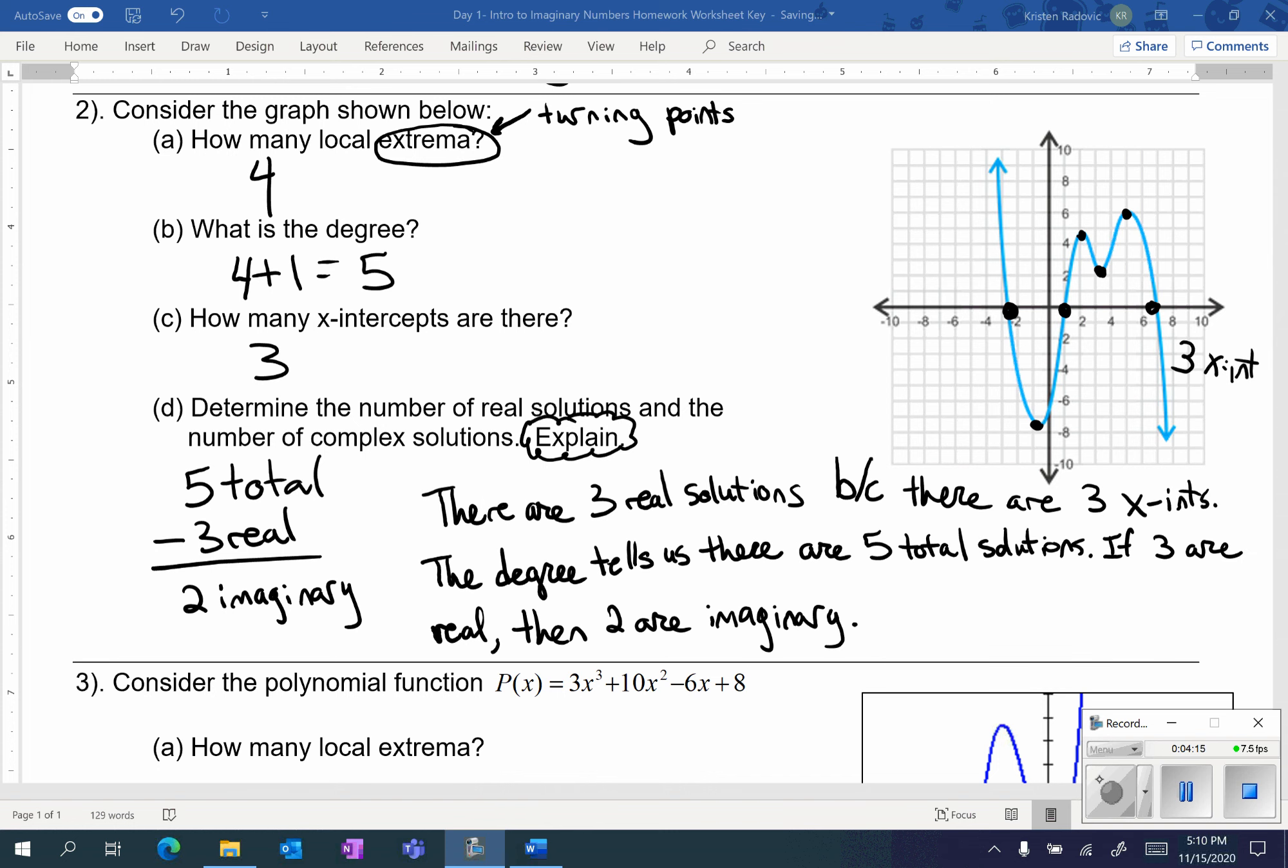There are three real solutions because there are three x-intercepts. The degree tells us there are five total solutions. If three are real, then two have to be imaginary.